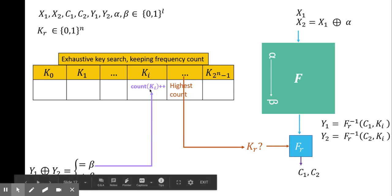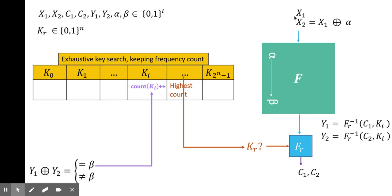We repeat these steps for all such plain text X1. When we have covered all possible plain text for X1, then we choose another key as our candidate key and repeat the process. We do so for all possible candidate keys. Finally, when we have iterated over all keys and over all plain text for each key, we look at the table to find the key with the highest count. The key with the highest count will be our round key Kr.